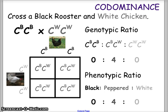When we determine the ratios, the genotypic ratio follows: homozygous for the first dominant trait, heterozygous for the combination trait, and homozygous for the second dominant trait. In this case, black is zero, the peppered appearance is four, and white is zero. For the phenotypic ratio — black to peppered to white — crossing the two homozygous parents gives all offspring peppered, so our phenotypic ratio is 0 to 4 to 0.